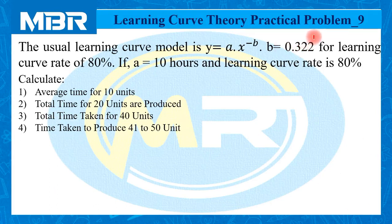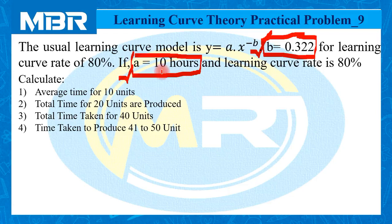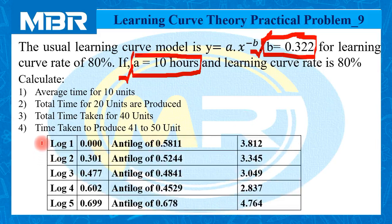In this question, the examiner has already given the learning coefficient — that is, the value of b as 0.322 — in ready-made form, and a equals to the time taken to produce the first unit. In the previous session we completed the calculation of the learning coefficient, but in this question the value is ready-made given so those calculations are not required. One more important instruction: the examiner has also provided information related to log values for different values.